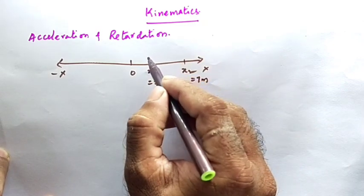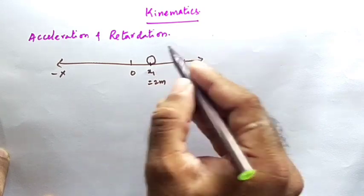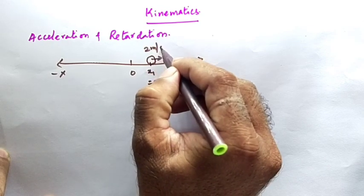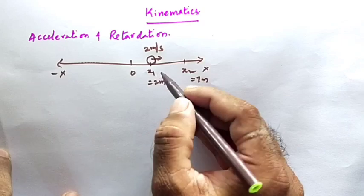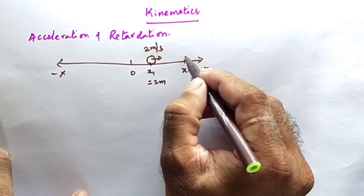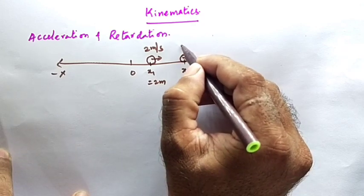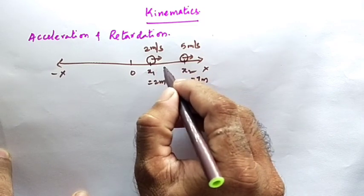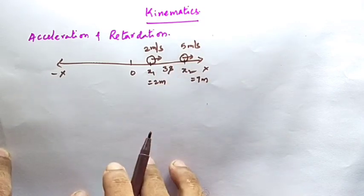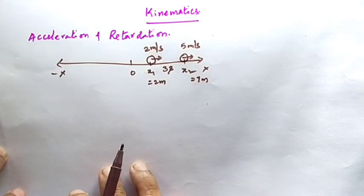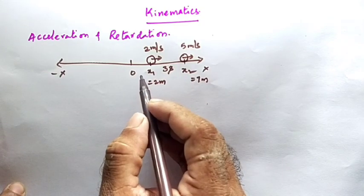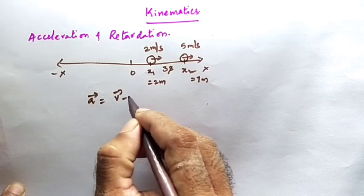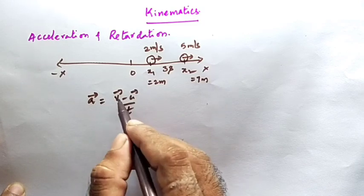At x1, the velocity of the body is 2 meters per second, and at x2 the velocity of the body is 5 meters per second. It has taken 3 seconds to move from x1 to x2. Now I would like to calculate the acceleration of the body. Acceleration is equal to change in velocity divided by time — that is, final velocity minus initial velocity divided by time.